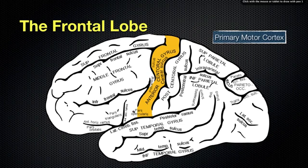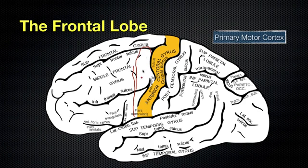Just anterior to that — it's not shown in this image, but this is the pre-motor cortex, which makes sense: if this is the primary motor cortex, and this is right before that, it's the pre-motor cortex. And here we have an area called the supplemental motor area. That plays a big role in initiating movement — when you want to move, there's an initiation that has to happen, and this is involved in that process.